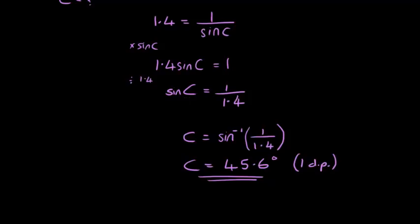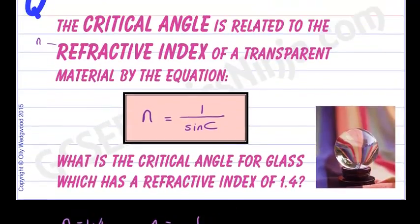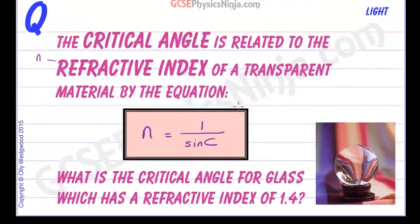45.6 is the critical angle of this particular type of glass and it's usually about 40-ish to 45 degrees for glass. And so that's the angle at which we will get a light ray just skimming as we come in here.